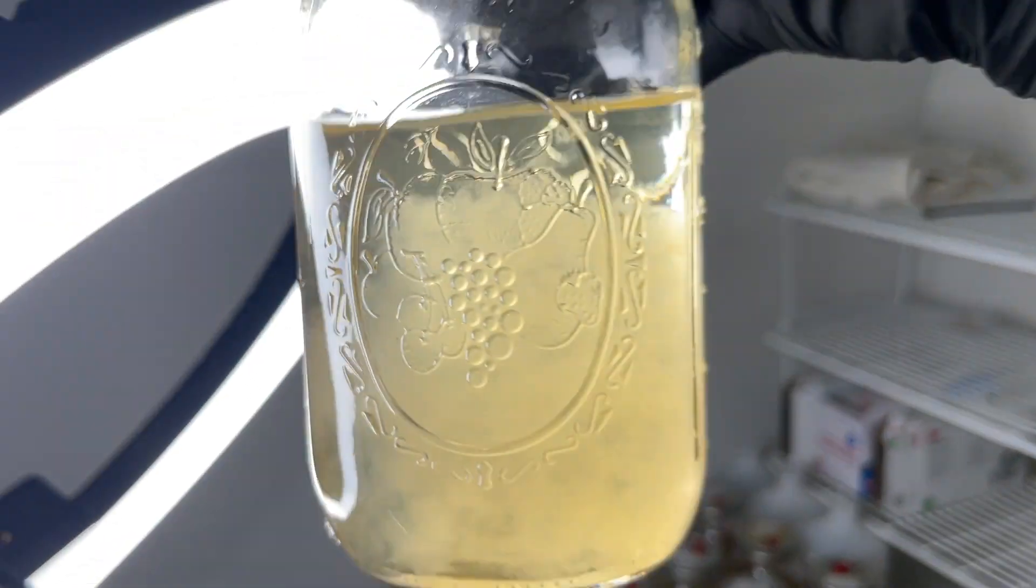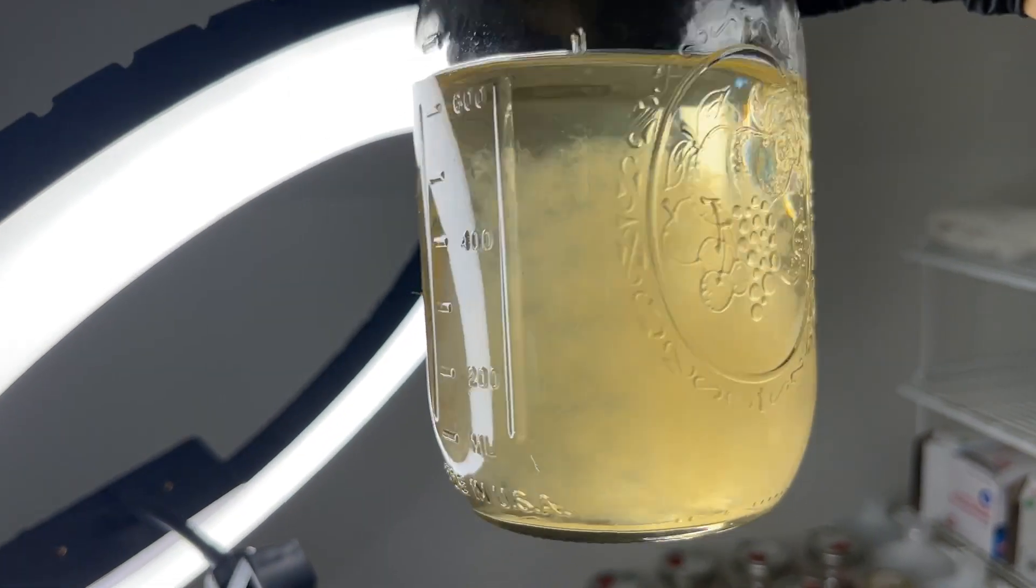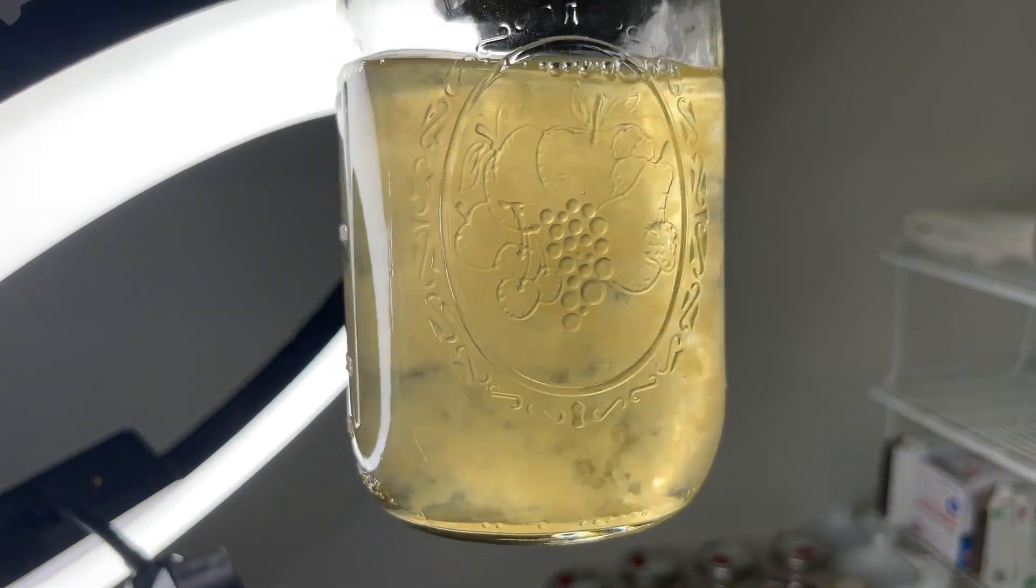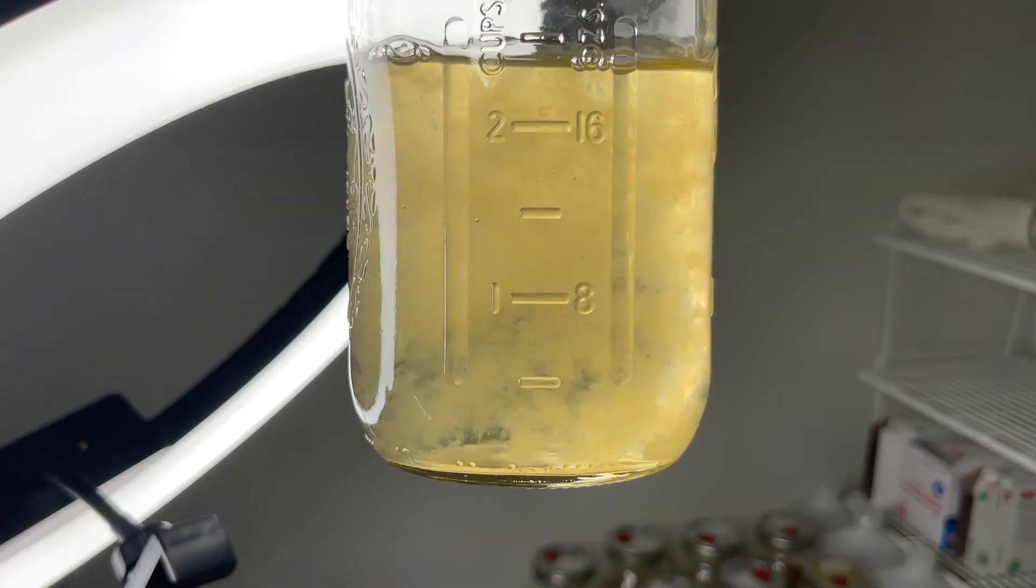The next one is white enoki, which I've seen one strain produce rounded fuzzy growth and another strain produce long stringy mycelium.